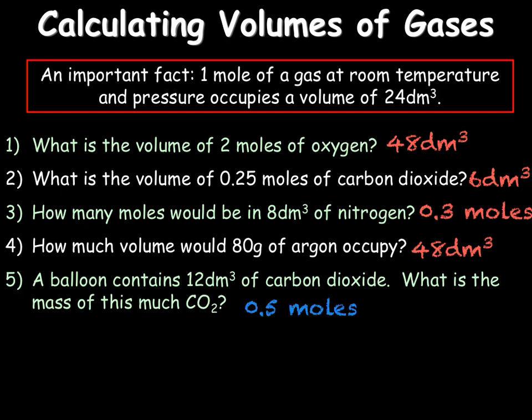In order to then work out our mass we need to do our moles times by our mr of carbon dioxide. In order to work out our mr we need to look up the molecular mass of both carbon and oxygen. Carbon which is 12 and oxygen which is 16. So we'll do 12 plus 16 times 2 giving us an mr of 44. Finally we can work out our mass by doing our moles times by our mr giving us a mass of 22 grams.